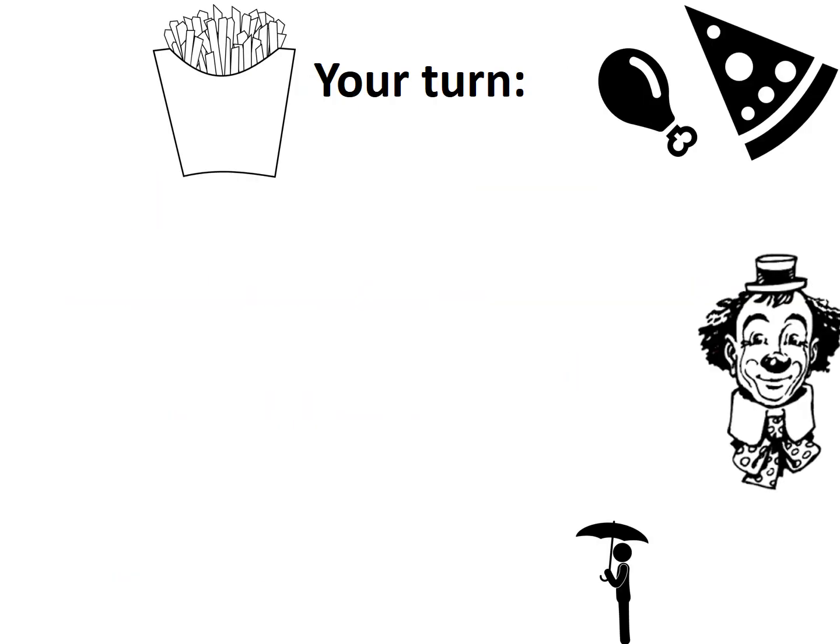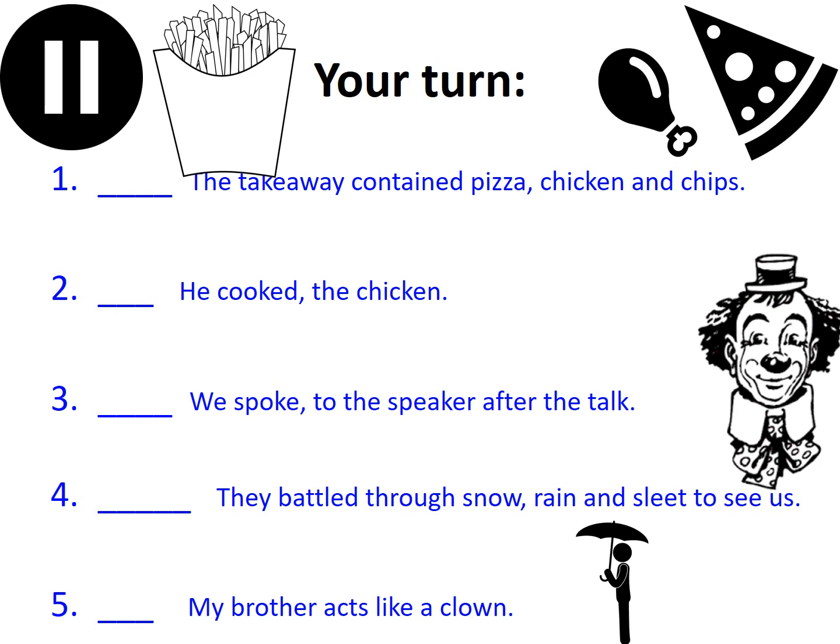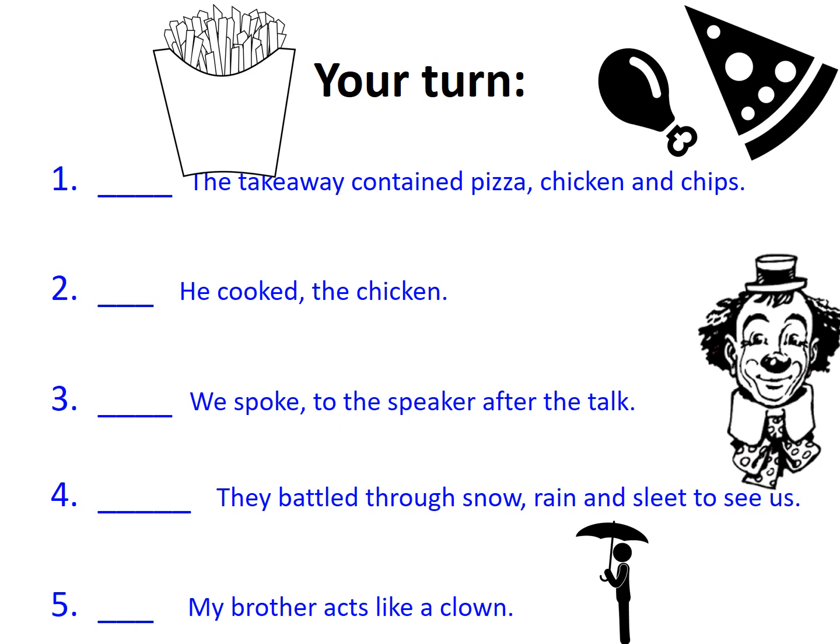Now it's your turn. For each of these examples I want you to identify if the comma is being used correctly, or whether the sentence itself needs a comma at all. In one instance — number five — it doesn't have a comma. I want you to confirm whether that is correct or incorrect. Hit pause if you need thinking time. 'The takeaway contained pizza, chicken and chips.'